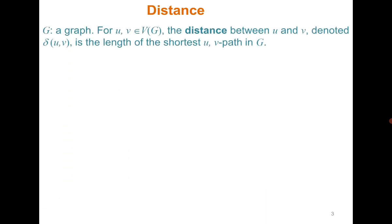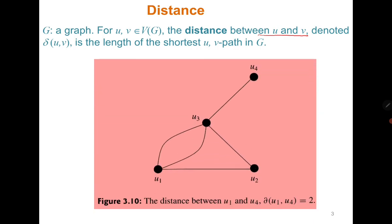To move to the center we first need to introduce the concept of distance. This concept is not restricted to a tree only. For any graph, the distance between vertices u and v is the length of the shortest path between u and v. For example, in this graph, from u1 to u4 you can follow a path of length 3 or a path of length 2. The distance is 2 because the shortest path between u1 and u4 has length 2.